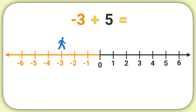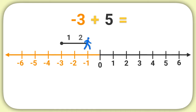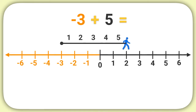Now because we are adding, this person is facing forward on the number line. To add 5, that person will walk forward 1 space, 2 spaces, 3 spaces, 4 spaces, 5 spaces. Now we can see the person is at 2. So negative 3 plus 5 is 2.